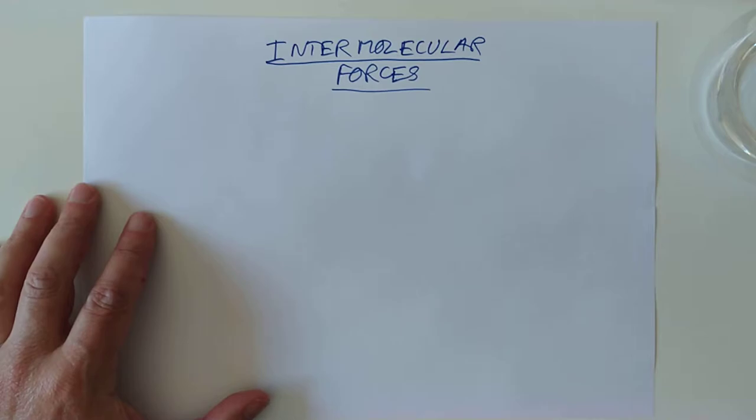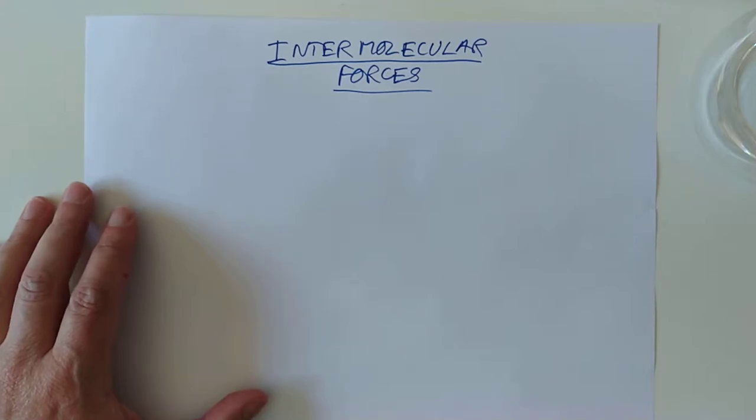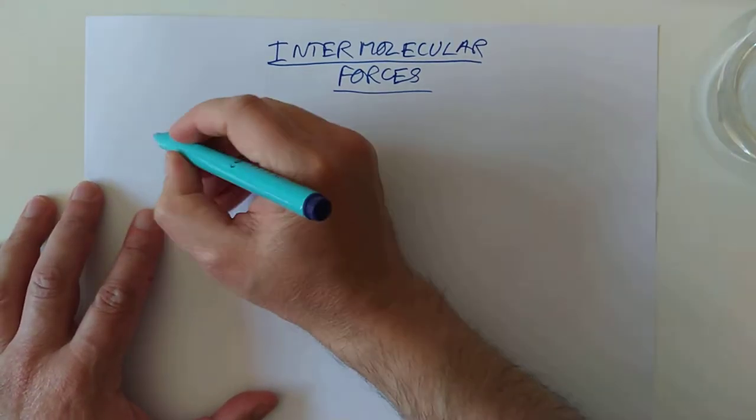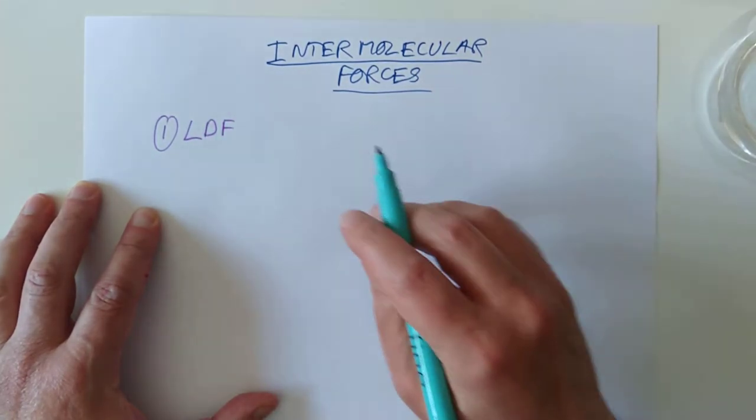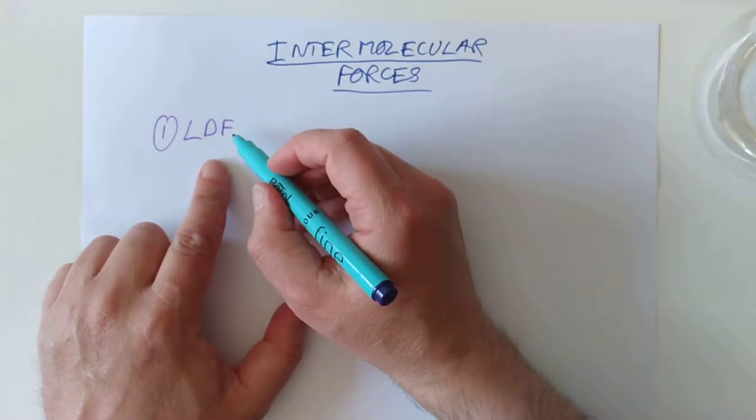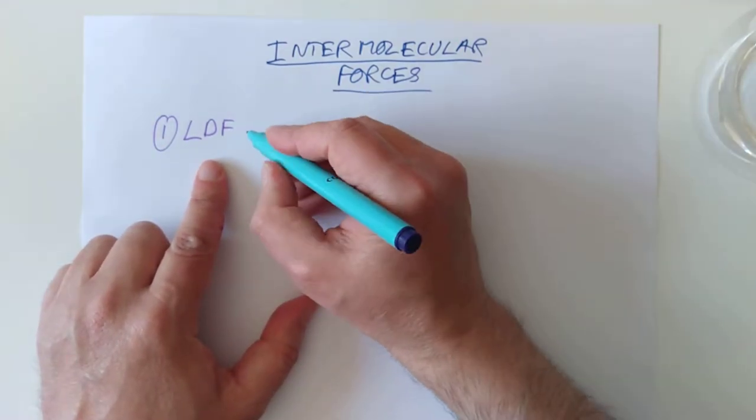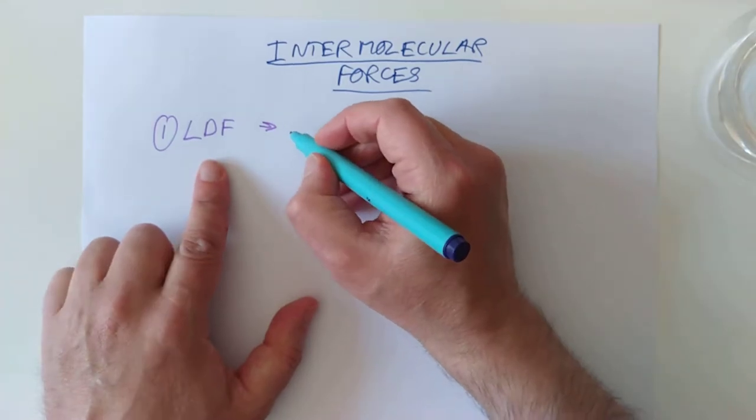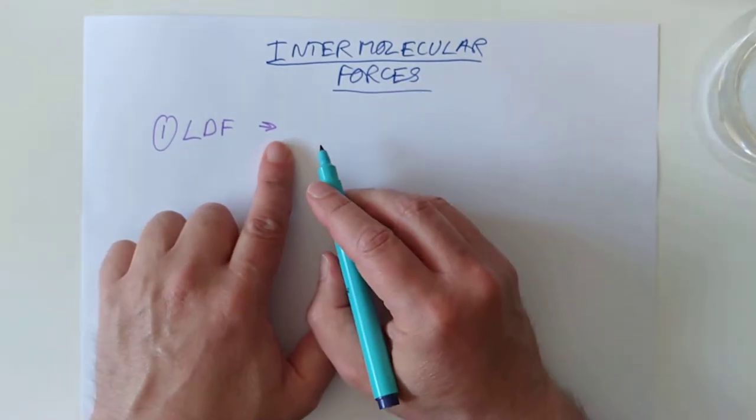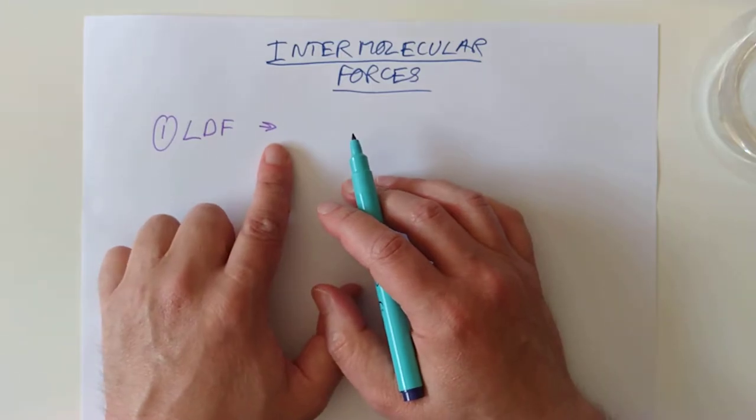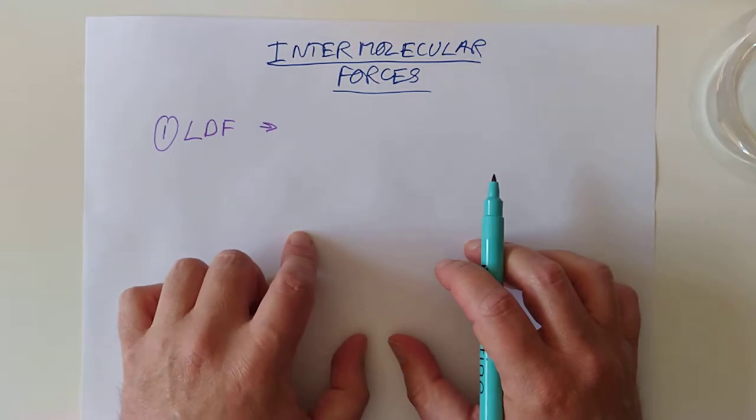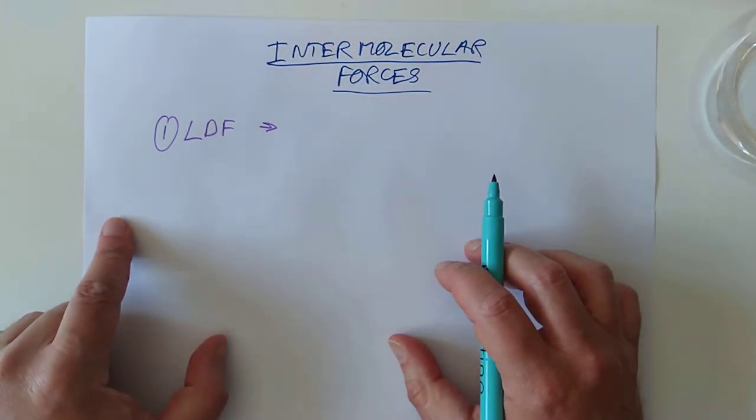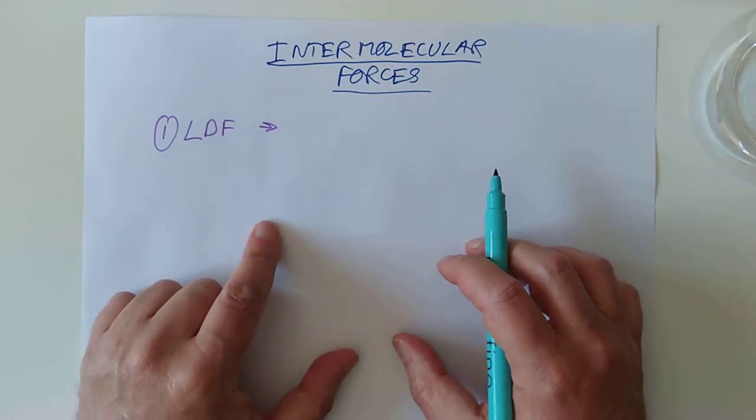We're going to say what causes them, what effects they have. The good news is, we're going to start with one that you already know. Our old faithful London dispersion forces. These are between every single atom and molecule. They are, if you remember back, caused by the uneven distribution of electrons as they move around the nucleus in an atom. This causes a temporary dipole, which induces another temporary dipole in the neighbouring atom.